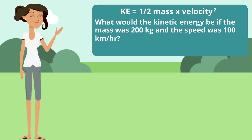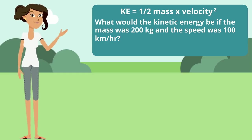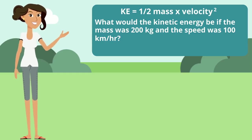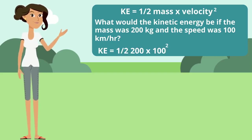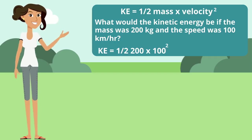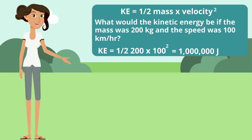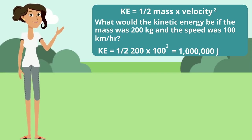But what would the kinetic energy be if the mass was 200 kilograms and the speed was 100 kilometers per hour? Again, plug it in. Half of 200 times 100 squared would give you a million joules.